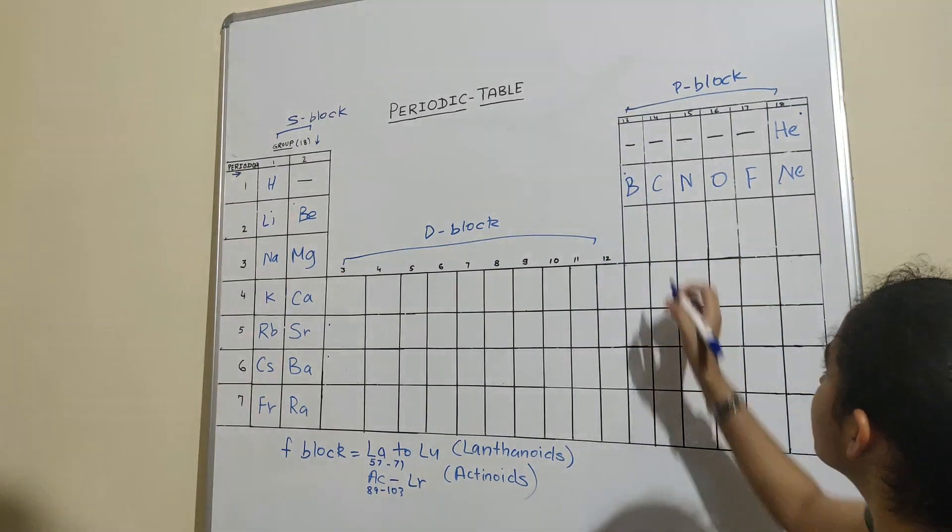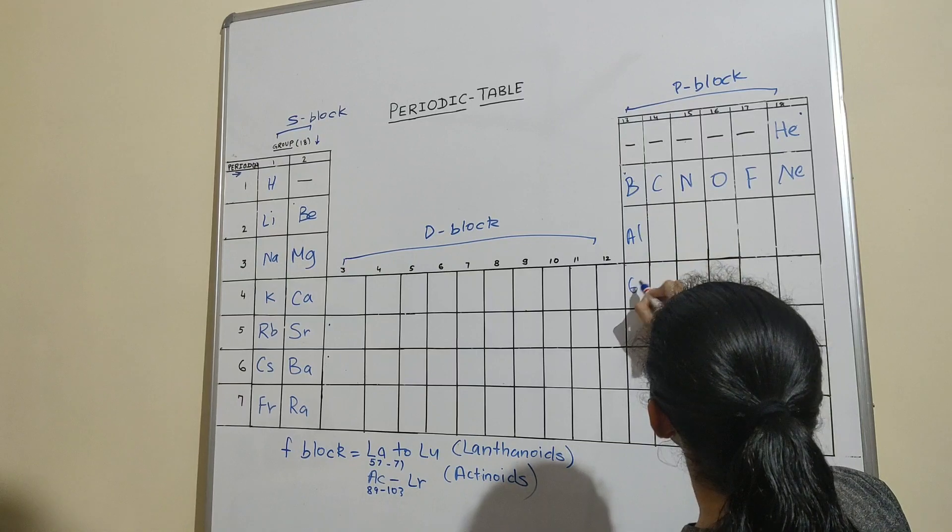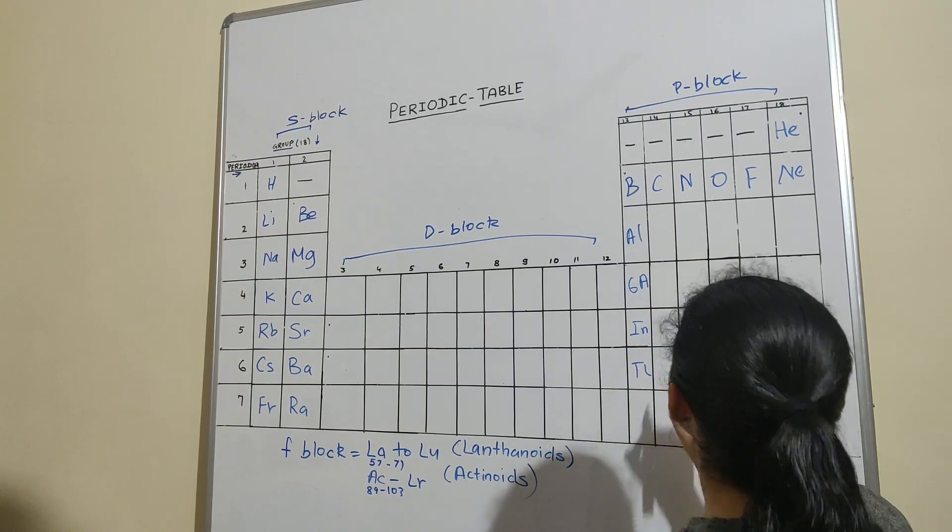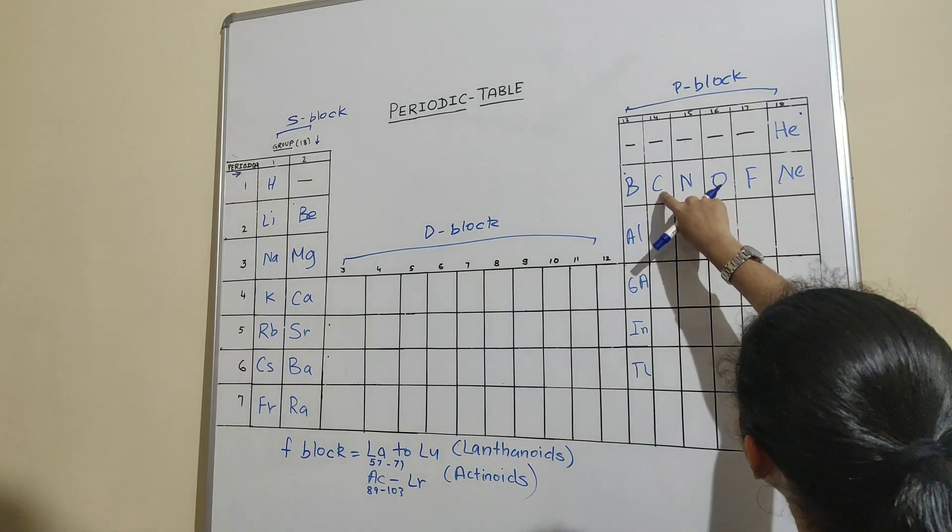Now I start with the thirteenth group, that is: Bangle-Aloo-Gajar-In-Thela. That is Boron, Aluminium, and so on.